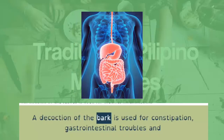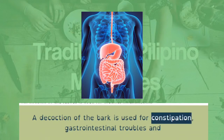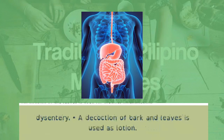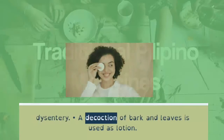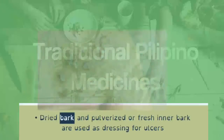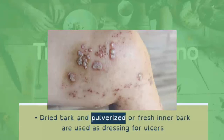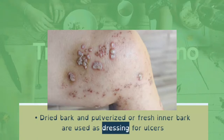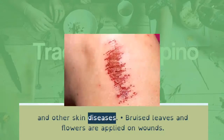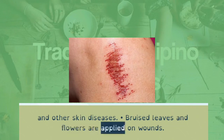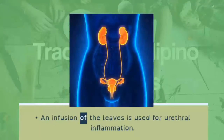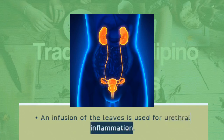A decoction of the bark is used for constipation, gastrointestinal troubles, and dysentery. A decoction of bark and leaves is used as a lotion. Dried bark, pulverized or fresh inner bark, is used as dressing for ulcers and other skin diseases. Bruised leaves and flowers are applied on wounds, and an infusion of the leaves is used for urethral inflammation.